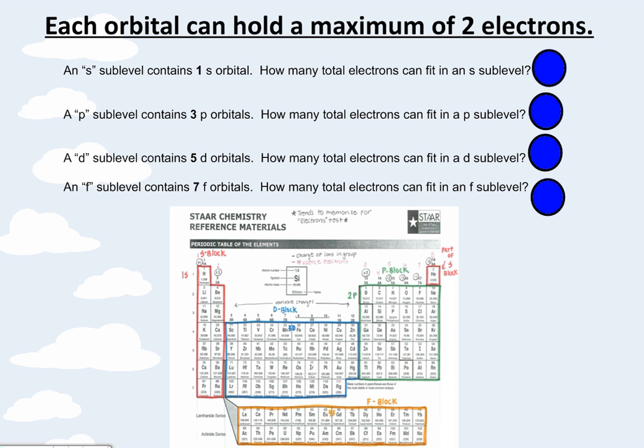Each orbital can hold a maximum of two electrons. So if we look at the S sublevel, it is actually two elements wide. So that is why it is one orbital, because each orbital can only hold two electrons. So it asks, how many total electrons can fit in the S sublevel? That would be two. If we look at P, one, two, three. It's made up of three P orbitals, but one, two, three, four, five, six electrons can fit in there.